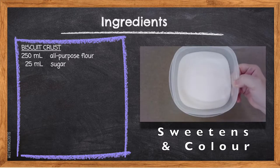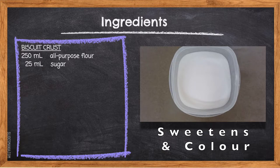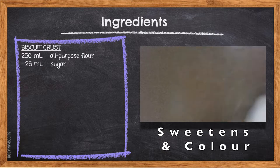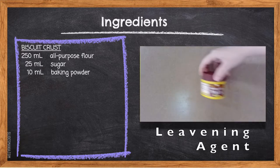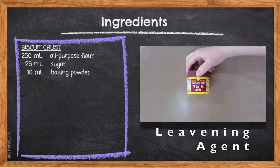25ml of sugar. Sugar will not only sweeten our biscuit dough, but provide the golden brown color as it caramelizes in the oven. Biscuits tend to be quite pale, so the caramelization color will only show up on the bottom and the edges.